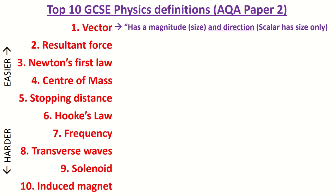Vector is a quantity that has a magnitude or size and a direction, as opposed to scalar which has a size only, no direction.